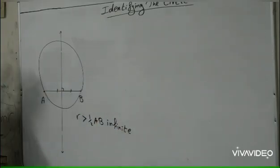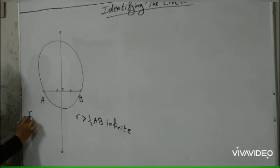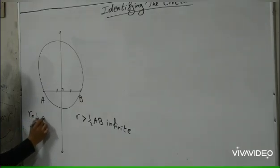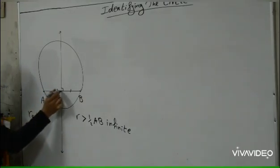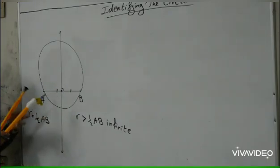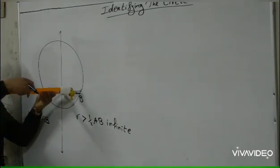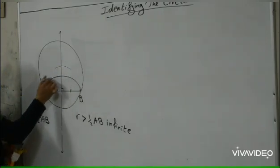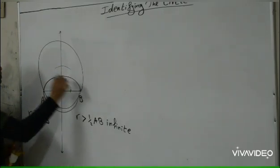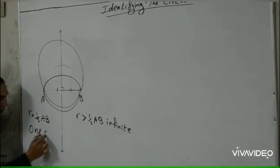What if the radius equals exactly half AB? The center of the circle will be at the midpoint on the axis of symmetry, and using the compass from that point will produce exactly one circle.